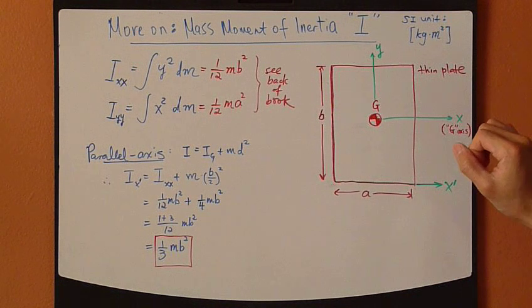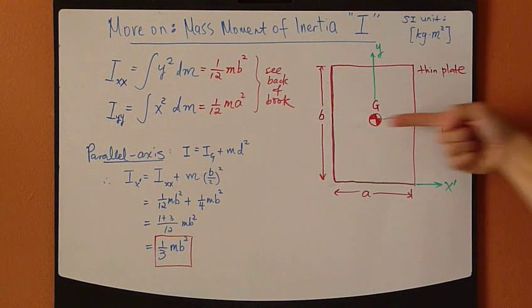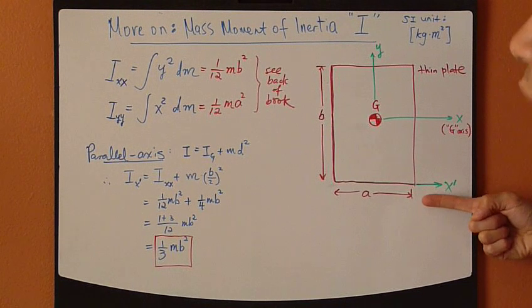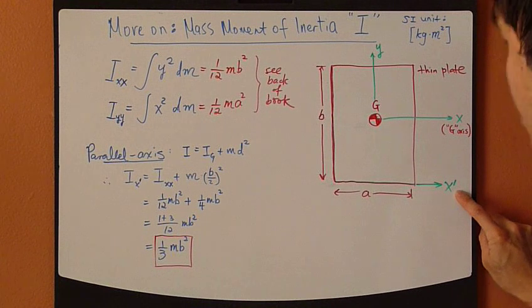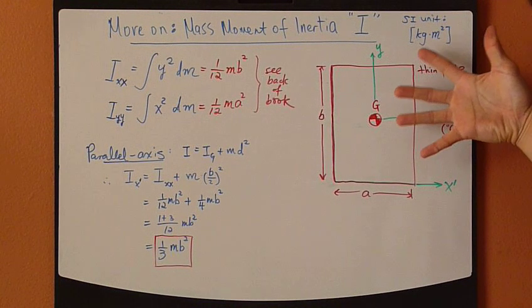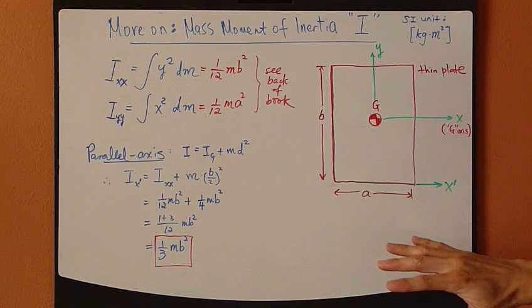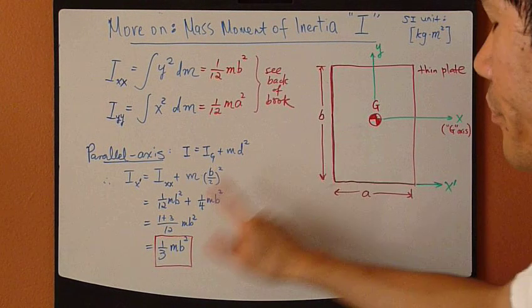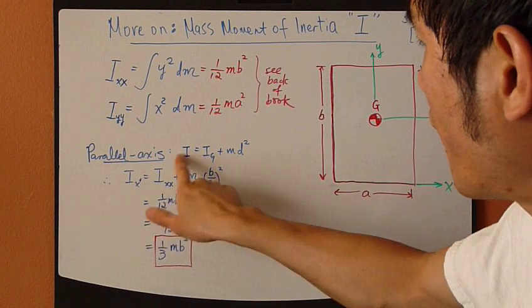So let's take this thin plate again for example. So this x-axis is my centroidal axis, but now this is my new axis, my bottom axis, so I call it x-prime axis. So I'd like to find the mass moment of inertia about this x-prime axis, so I'm going to just simply apply the parallel axis theorem. So it turns out to be this.